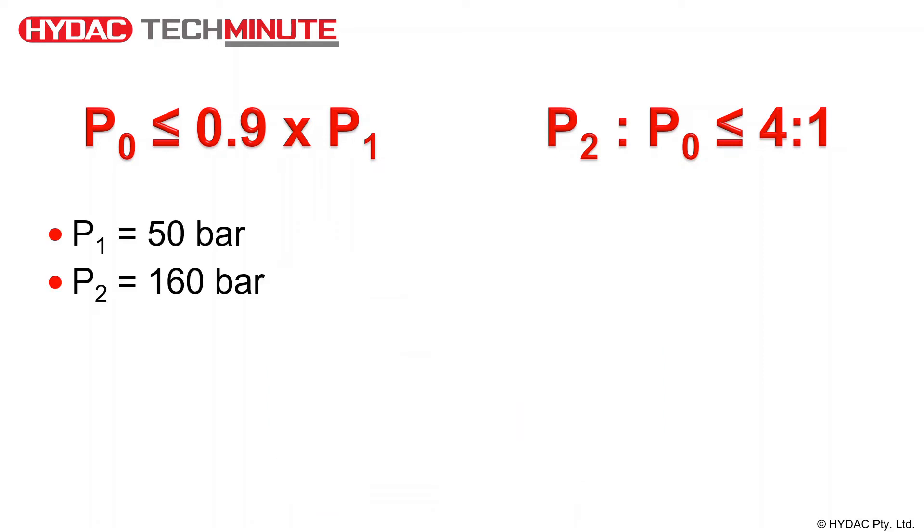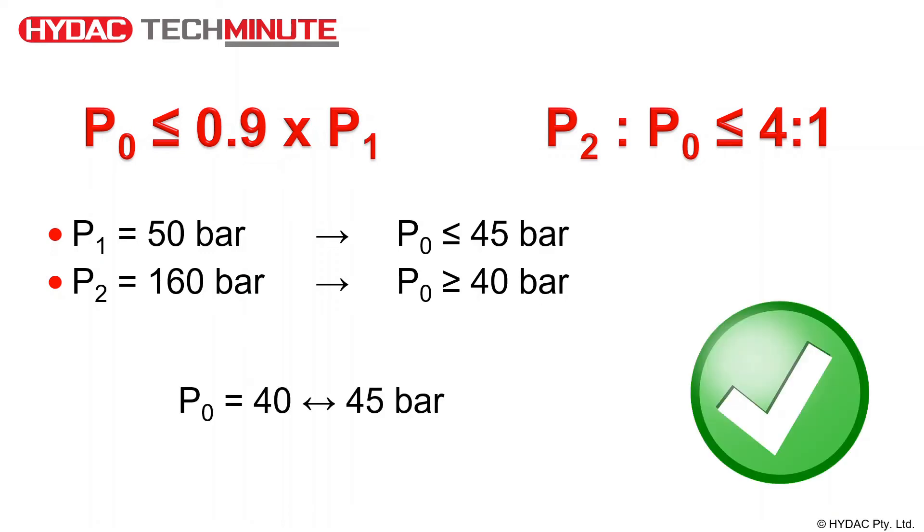Here is an example of determining the correct pre-charge pressure for the accumulator and the system. With a minimum system pressure of 50 bar, we can use the 90% rule to determine that our pre-charge pressure should be 45 bar or less. And with a maximum system pressure of 160 bar, we can determine that the pre-charge pressure should be 40 bar or more. Therefore, a pre-charge pressure between 40 and 45 bar is acceptable.